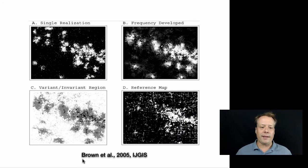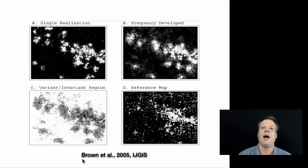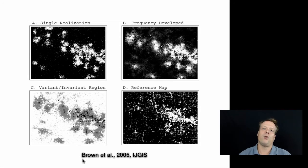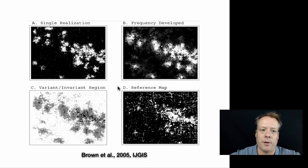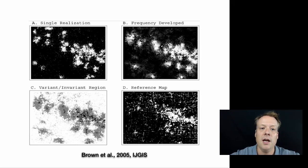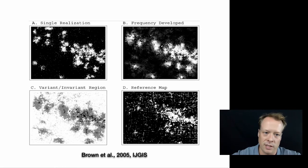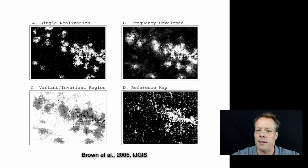A lot of these ideas on path dependency and stochasticity come out of a paper I was part of back in 2005, where we were looking at land development using agent-based modeling. Here is a graphic from that paper. You can look at a single realization of the model outcome, where white indicates a particular parcel of land is developed and black indicates it isn't. You could also look at the frequency with which each model area was developed.